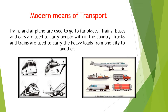As you can see in the image, trains and airplanes are used to go to far places. Trains, buses, and cars are used to carry people within the country, but trucks, trains, and different means of transportation are used to carry heavy loads from one city to another, like airplanes and trains.